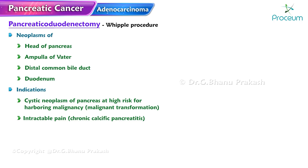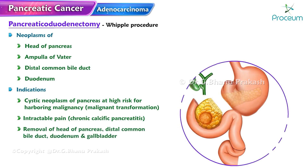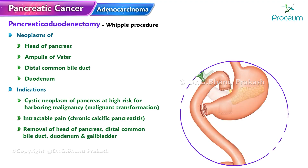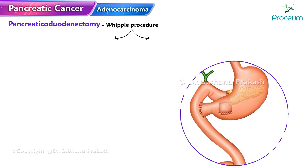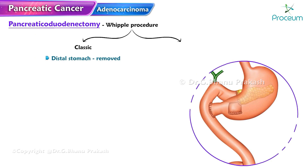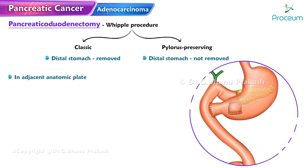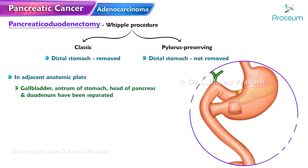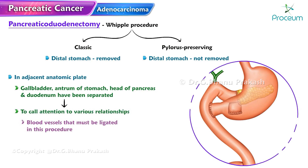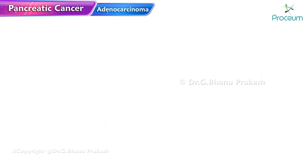Pancreaticoduodenectomy involves the removal of the head of the pancreas, distal common bile duct, duodenum, and gallbladder. In a classic Whipple procedure, the distal stomach is also removed, whereas in a pylorus-preserving pancreaticoduodenectomy it is not. An anatomic plate illustrates the gallbladder, antrum of the stomach, head of the pancreas, and duodenum, highlighting the blood vessels that must be ligated during this procedure.